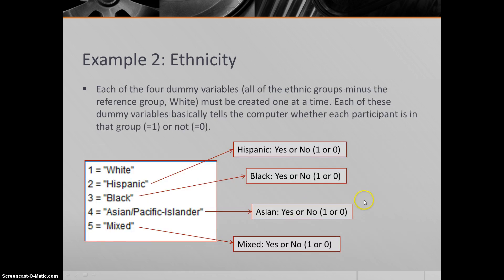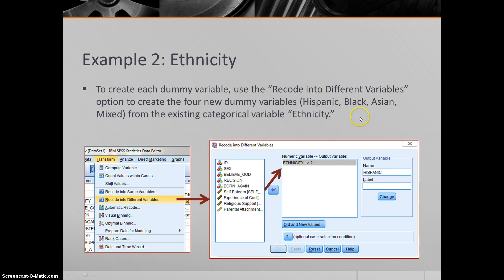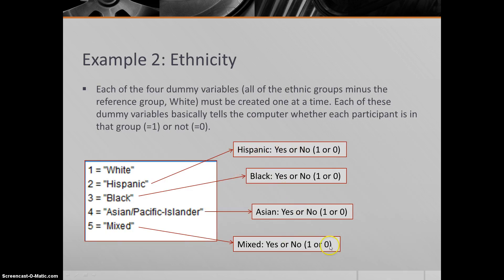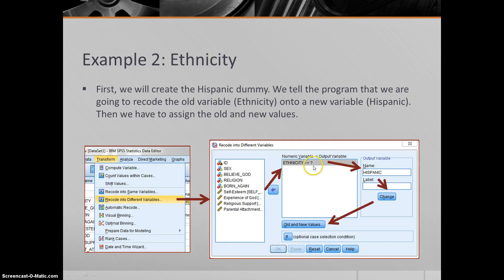So how do we create these new variables? It's a little bit of a process. What we have to do is use the option under Transform, Recode into Different Variables. When you click on that, it opens up this window right here. You have an old variable and a new variable. You're going to use information from an old variable to create a new variable. The old variable is ethnicity—this is our existing categorical variable that has these five levels. We're going to create four new variables: Hispanic, black, Asian, and mixed. So what we do is we tell it our old variable is ethnicity. The new variable will be Hispanic. So we've got to make four, so we do this four different times. The first time, we type in the word Hispanic right here.